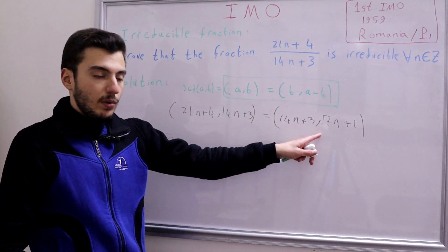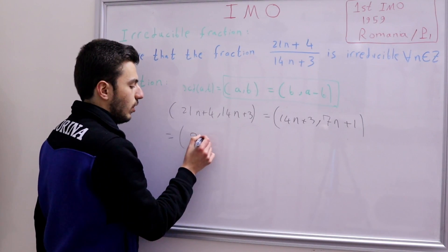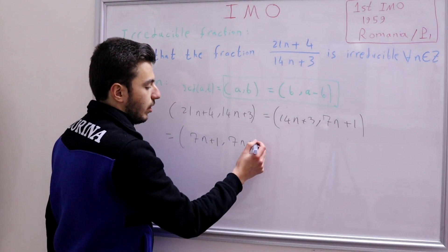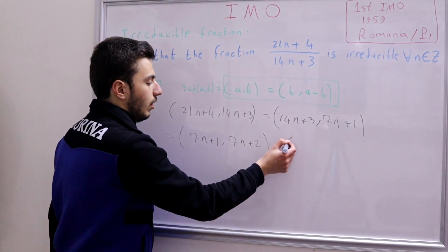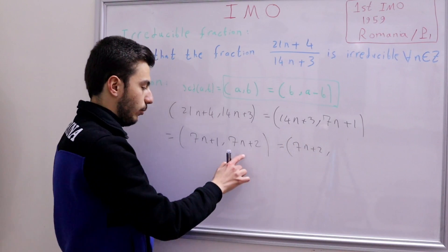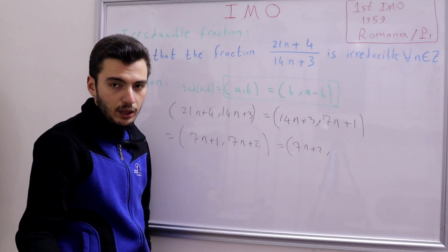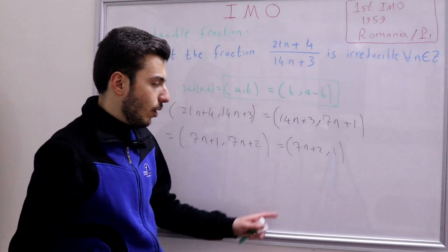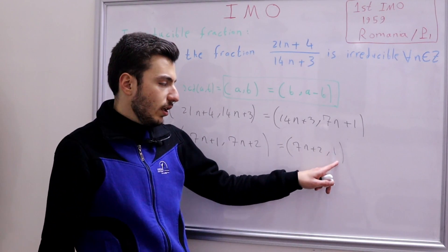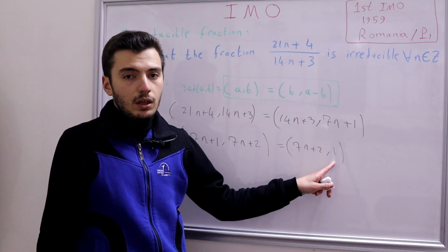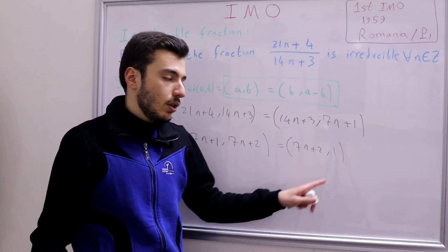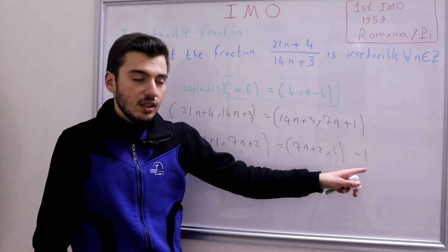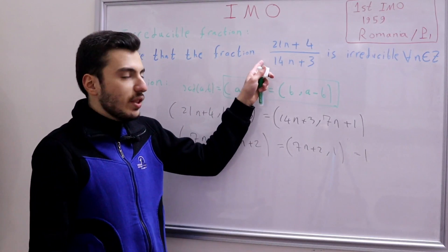Apply again: GCD(7n+1, 14n+3 − (7n+1)) = GCD(7n+1, 7n+2). Apply again: GCD(7n+2, 7n+1 − (7n+2)) = GCD(7n+2, −1) = GCD(7n+2, 1). The GCD of 1 and any number is 1, since the only divisor of 1 is 1. So their GCD is 1, meaning the numerator and denominator are relatively prime, meaning the fraction is irreducible. We've solved our first IMO problem.